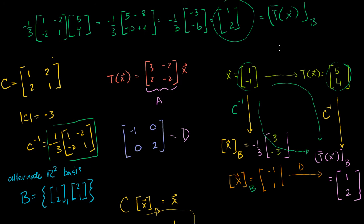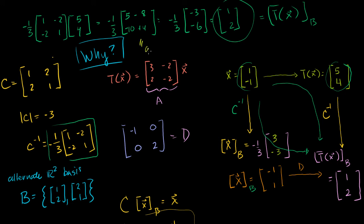You should hopefully be reasonably convinced that you can change your basis and find a transformation matrix — we've shown how to do it. But the obvious question is: why do you do it? Someone actually wrote a comment on the last video capturing the art of why. Their linear algebra teacher said that linear algebra is the art of choosing the right basis.